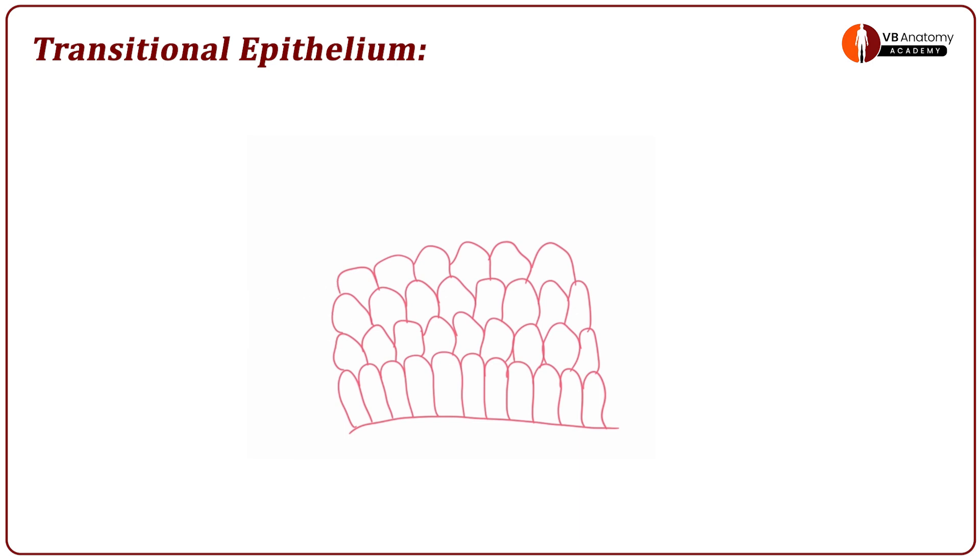Let us try and add the last, the topmost layer. Remember the topmost layer of transitional epithelium cells are very large. They are called umbrella cells. Large cells called umbrella cells form the top layer of transitional epithelium.